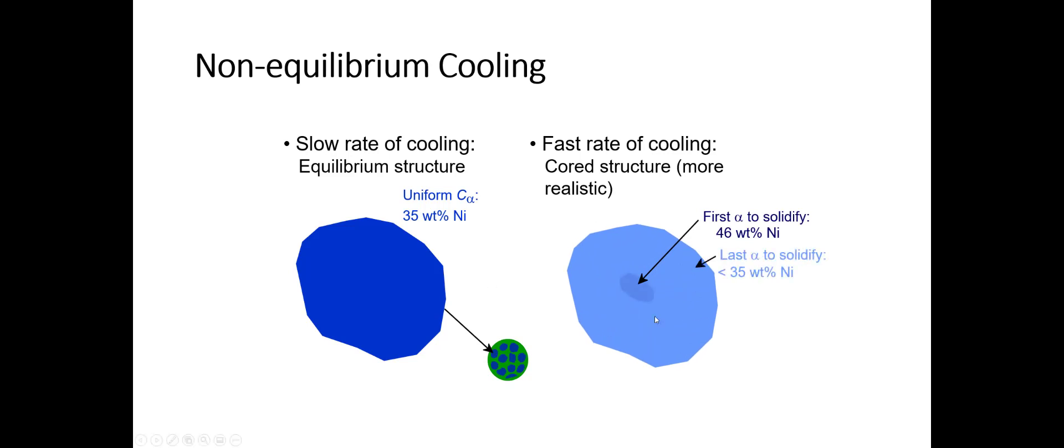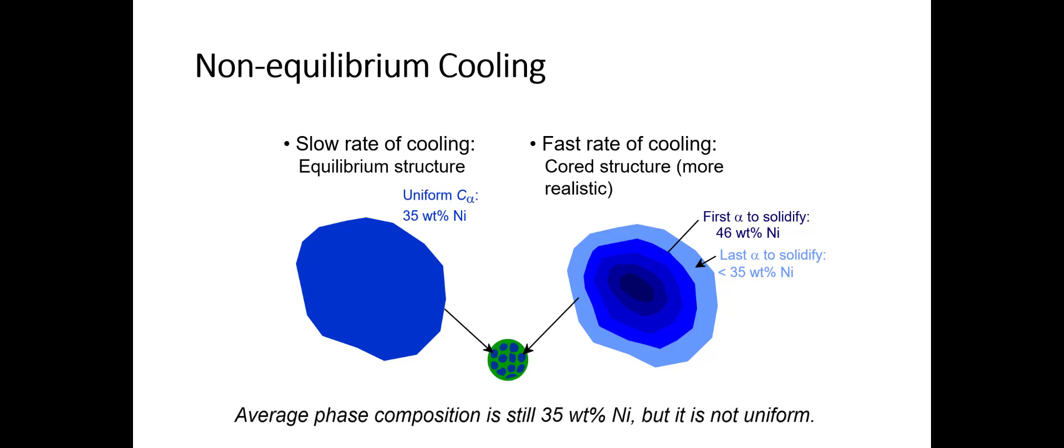What we're looking at here is the grain. We have the alpha here that's first to solidify at 46 weight percent, and then it's going to have differing and decreasing values of weight percent nickel phase composition as we go out from that nucleus. To make this whole thing come out as 35 weight percent nickel, which it must, then these last regions at the outside of the structure are lower than 35 weight percent nickel because the average phase composition is still 35 weight percent nickel. The idea is that it still holds in terms of what the phase diagram shows, but the composition of the alpha phase for any individual grain is not actually uniform.